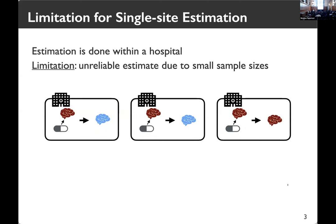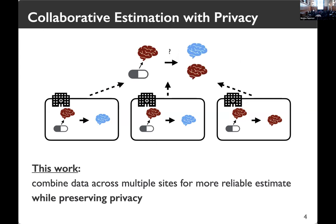Typically, treatment effect estimation is done within each hospital which has all patients' data. However, the issue is that the estimate can be unreliable because a hospital can only have a limited amount of data. Since there exist multiple hospitals in the world, the natural solution would be to combine data across multiple sites for a more reliable estimate. However, due to privacy concerns, we need to do this in a privacy-preserving manner, and that is exactly what our work is doing.